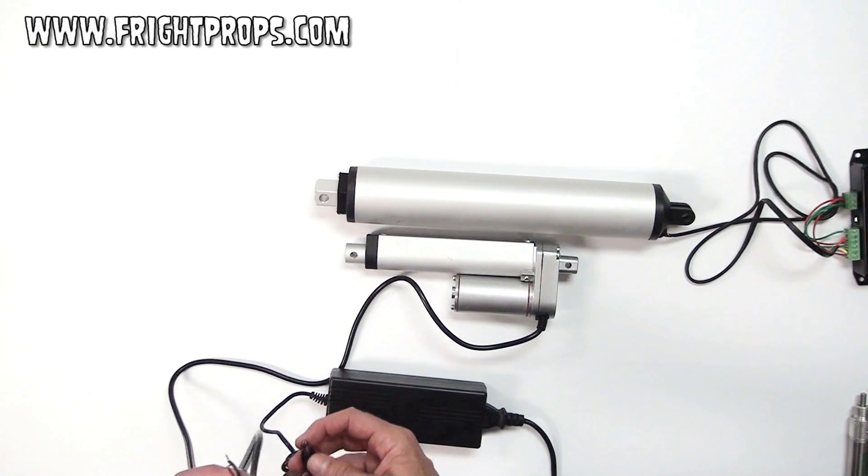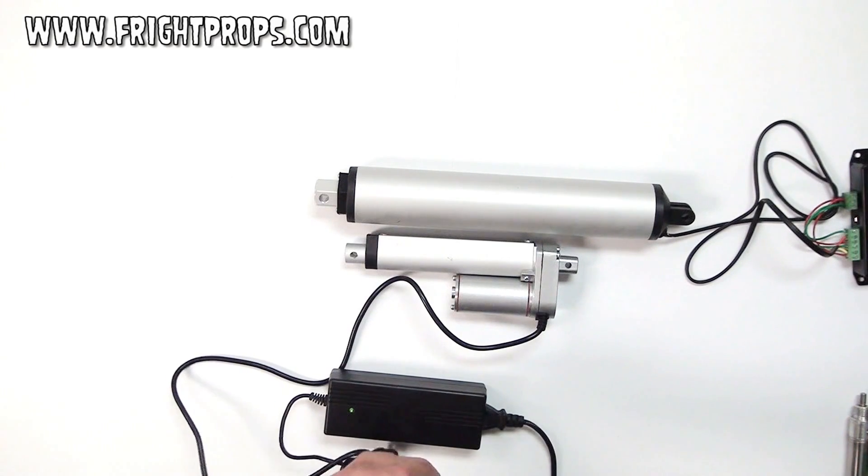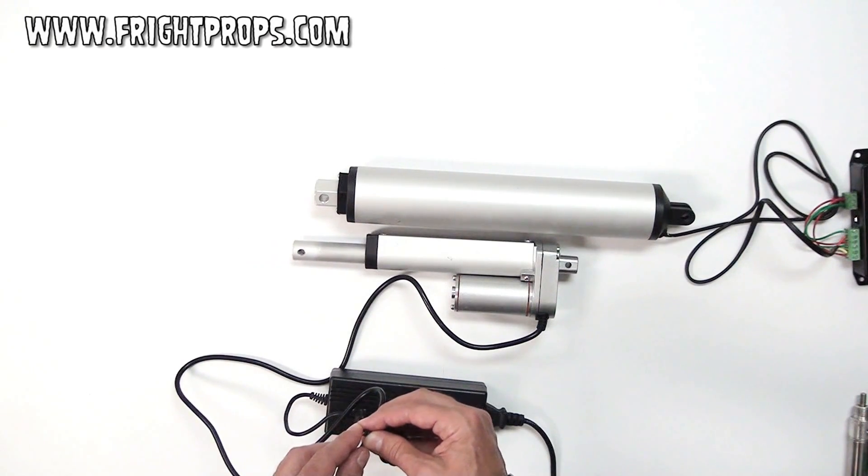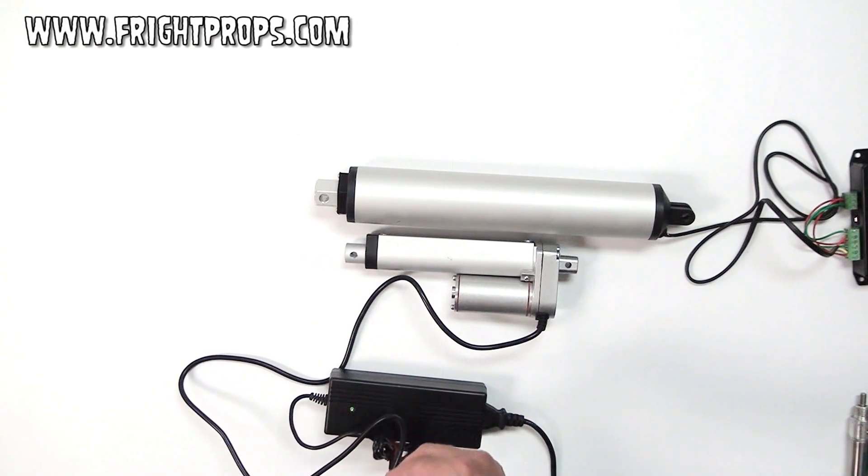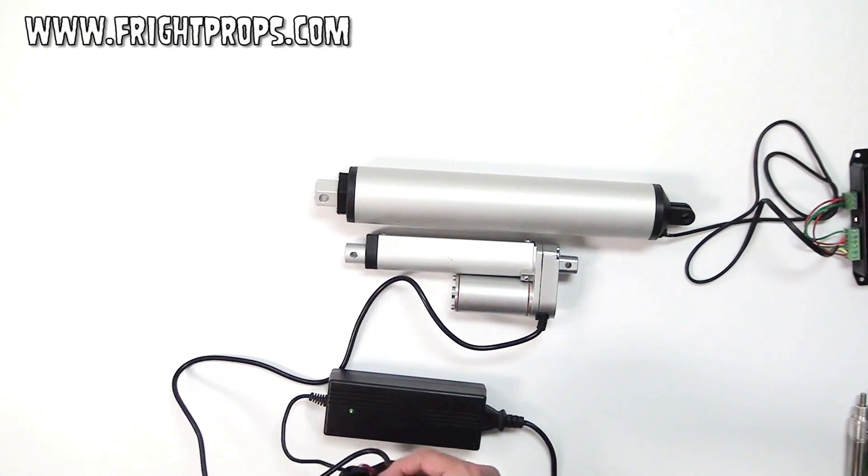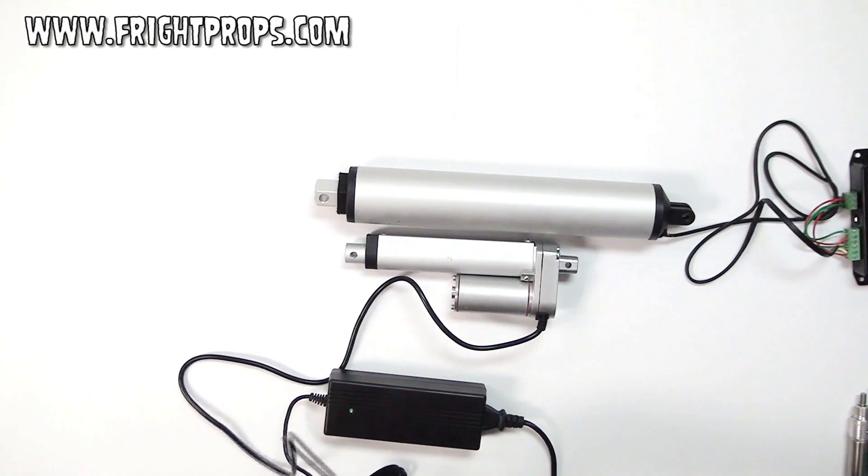By simply connecting the power to the actuators wires, it'll move the actuator in one direction, and by reversing it, it'll move it in the other direction. It's that simple. But sitting there manually swapping wires really isn't too practical, and it'll get pretty boring.